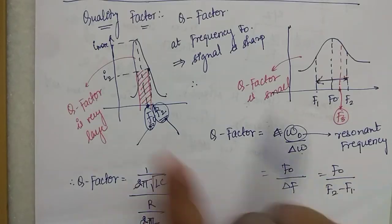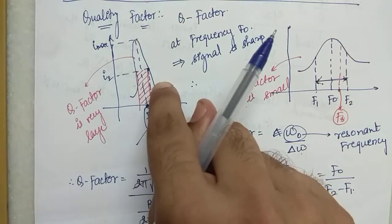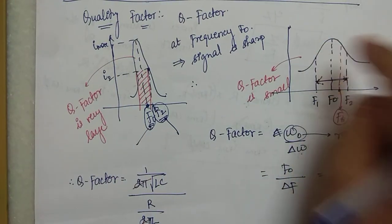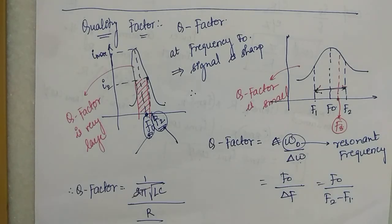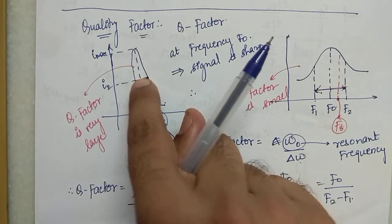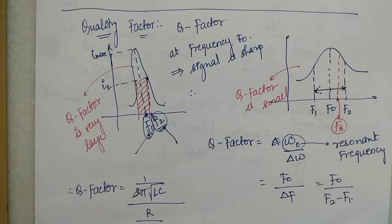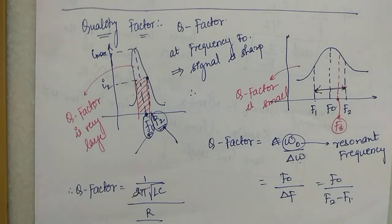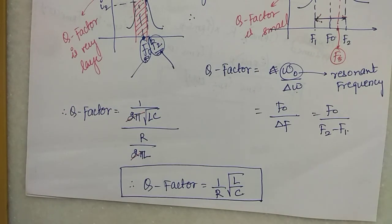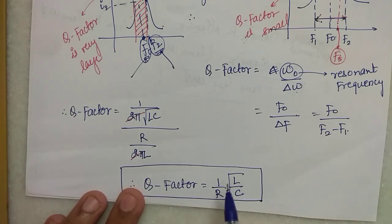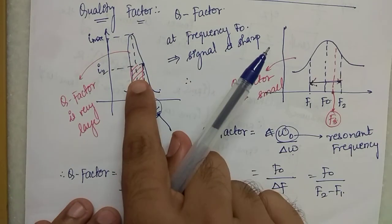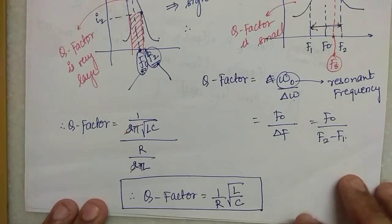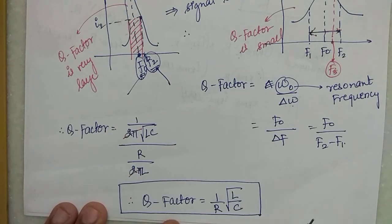The higher the Q factor, the sharper the peak. The lower the Q factor, the more flattened the peak. A high Q factor circuit is a better selective circuit. In communications, the quality factor is very important — you want a sharp, high-Q peak rather than a broad, low-Q one.